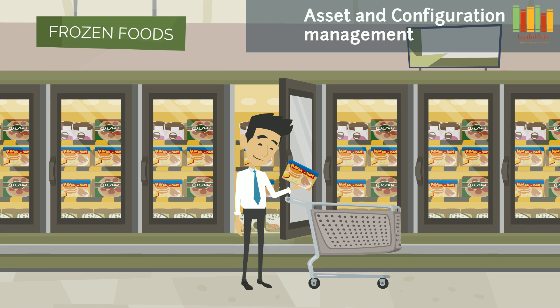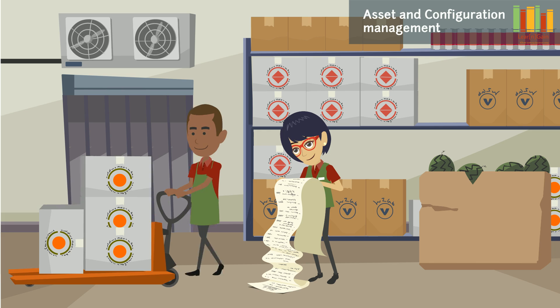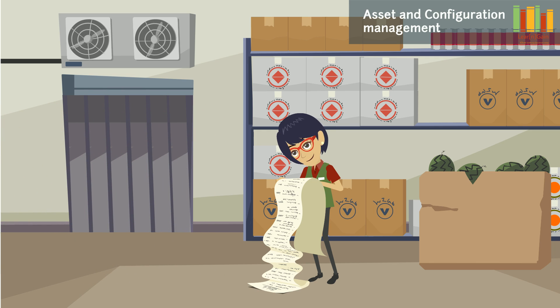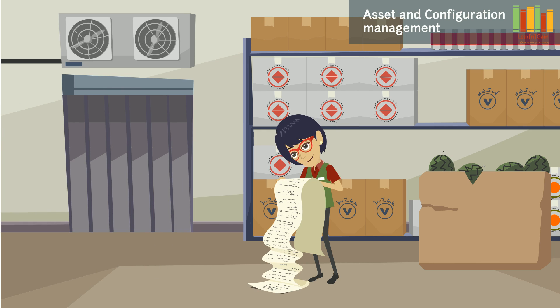Let us consider a scenario in a supermarket for understanding service asset and configuration management. A supermarket has to maintain inventory data of all products at all times. The store has to manage the information of all the products available in the store — items available in inventory, expiry date, when more items are needed, and so on.